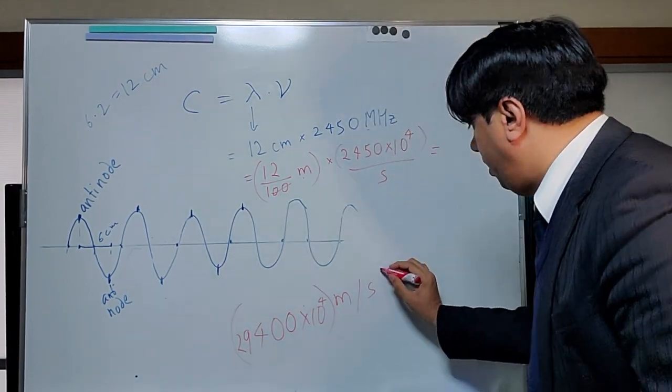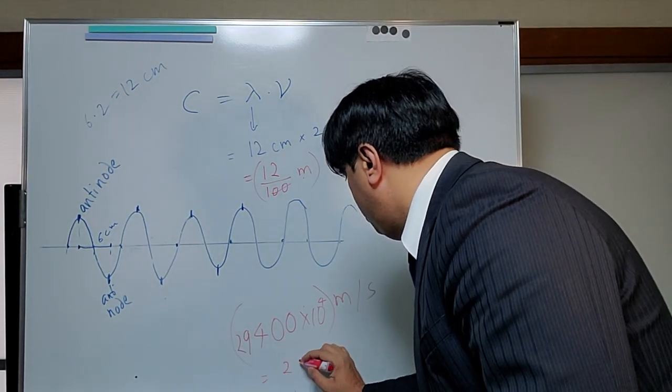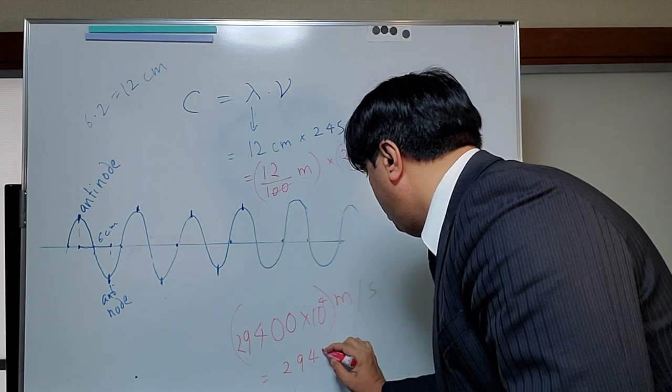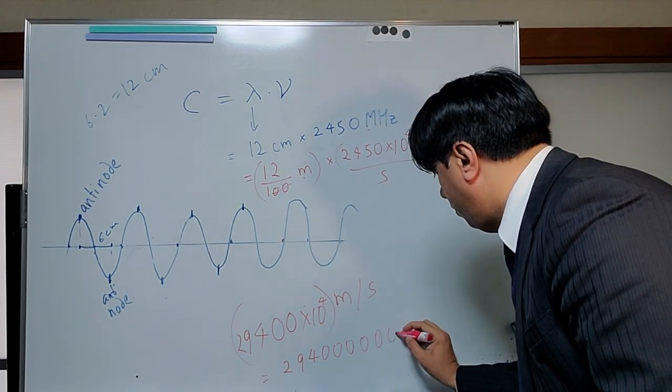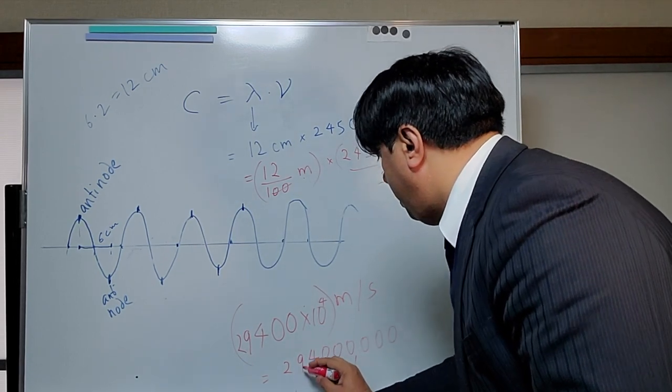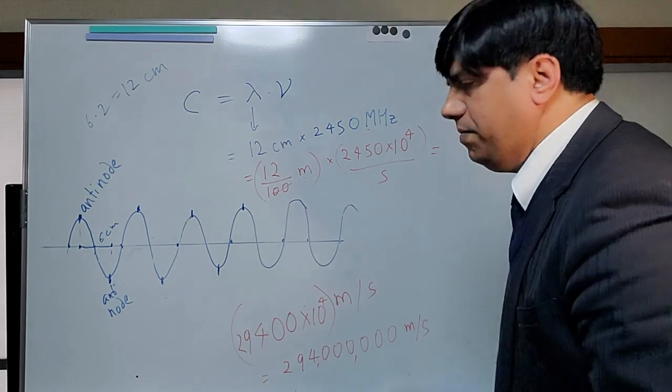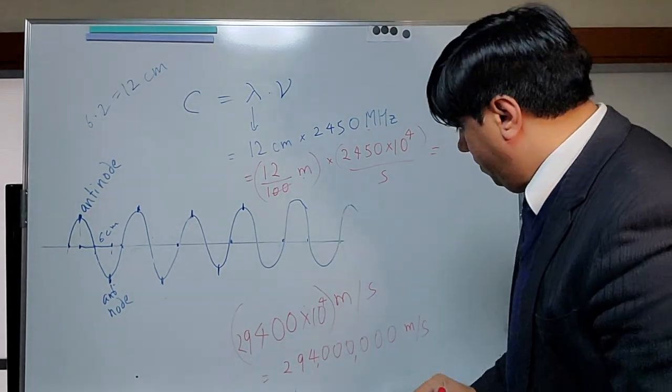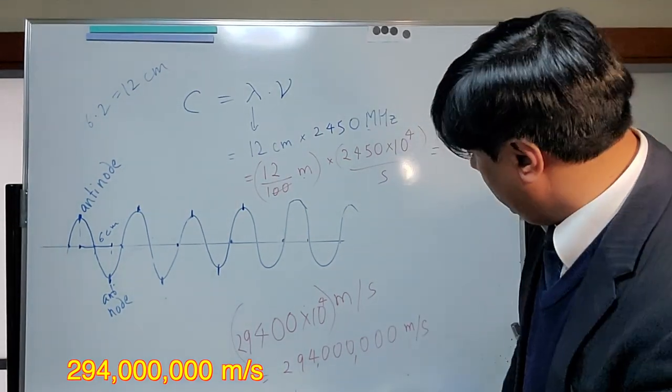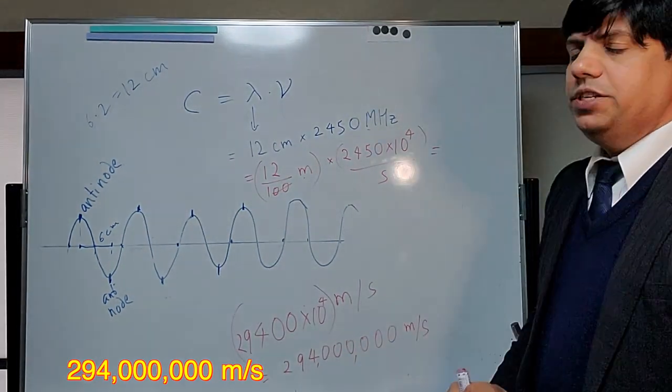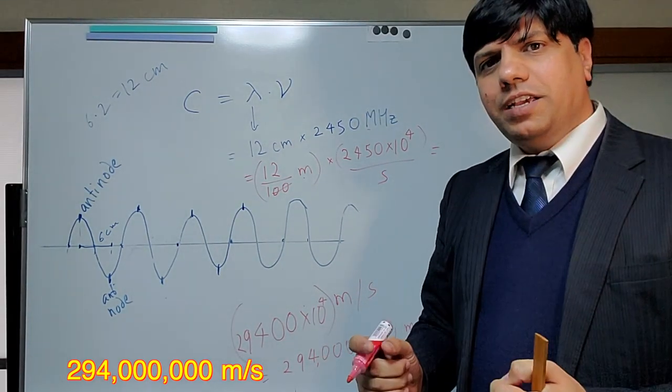And that actually comes out to be 294, 0, 0, and then 4 zeros, 1, 2, 3, 4. 294 million meter per second. I don't know if it's captured. Yes, is it? Yes. So that's our calculation. 294 million meter per second.